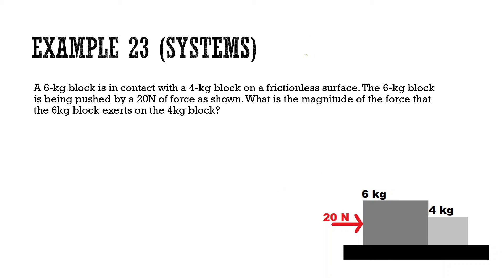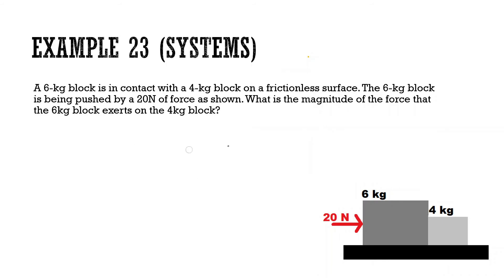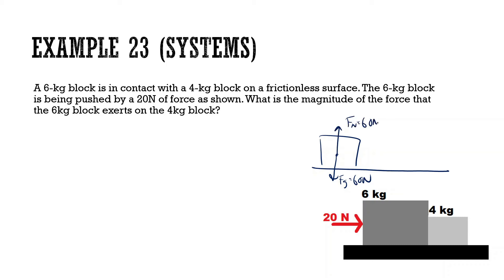Draw free body diagrams. For the 6 kg block: gravity 60 N, normal 60 N, force of 4-on-6 pushing left, force applied 20 N. For the 4 kg block: gravity and normal forces, and force of 6-on-4 pushing right.